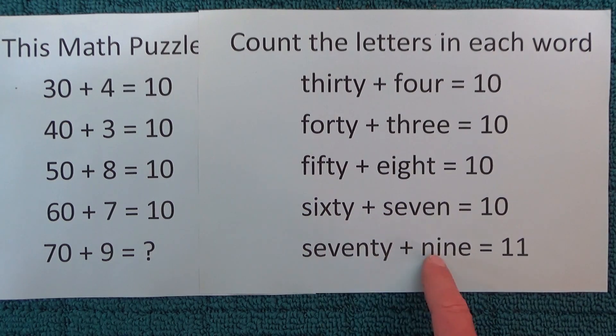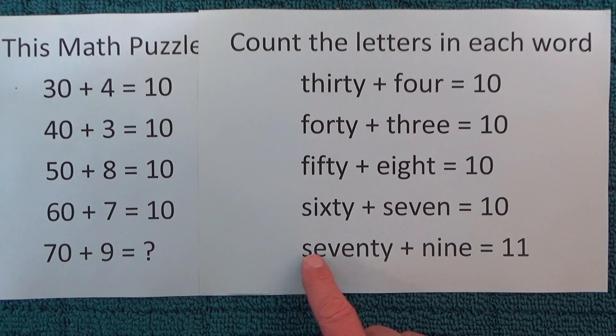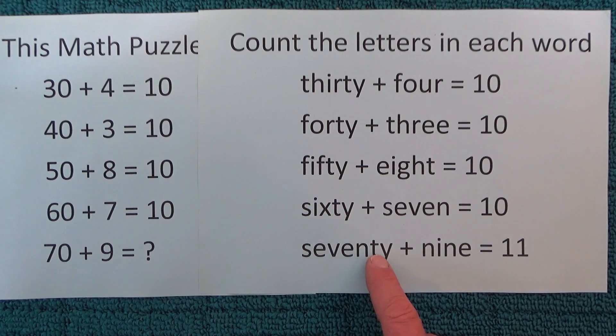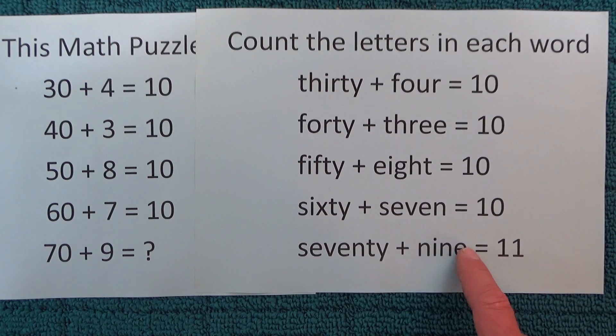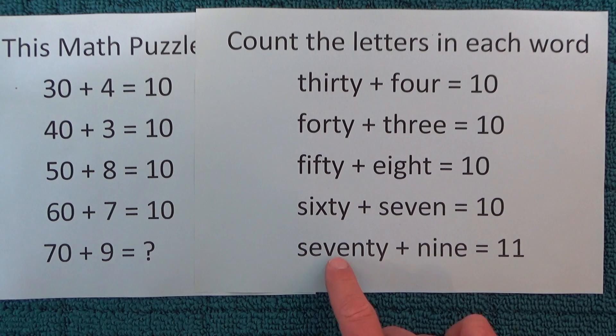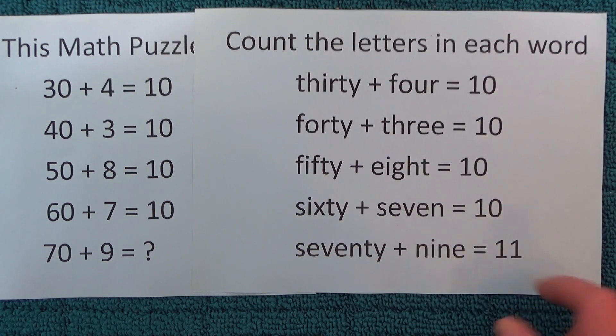And then when you come to 70 plus 9, you've got 1, 2, 3, 4, 5, 6, 7 letters in seventy and 1, 2, 3, 4 letters in nine. So 7 plus 4 equals 11.